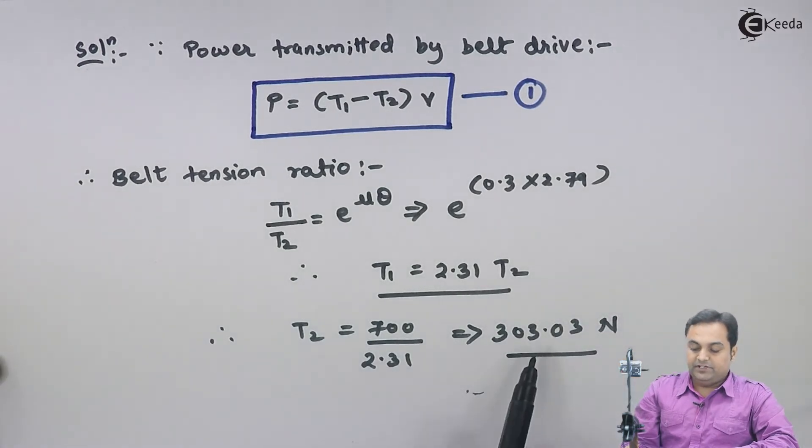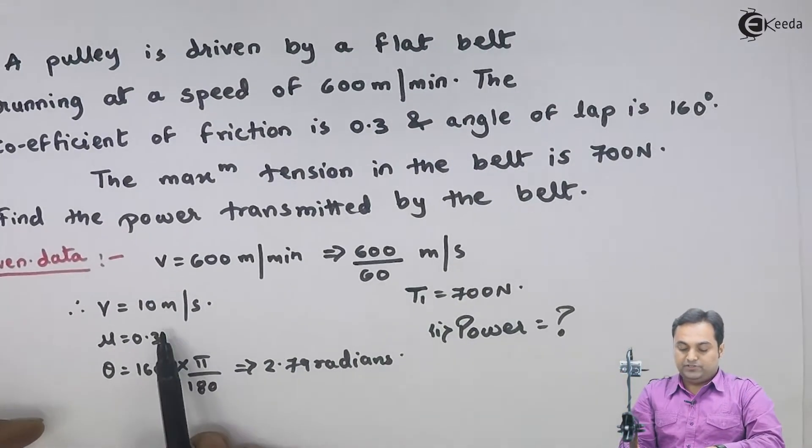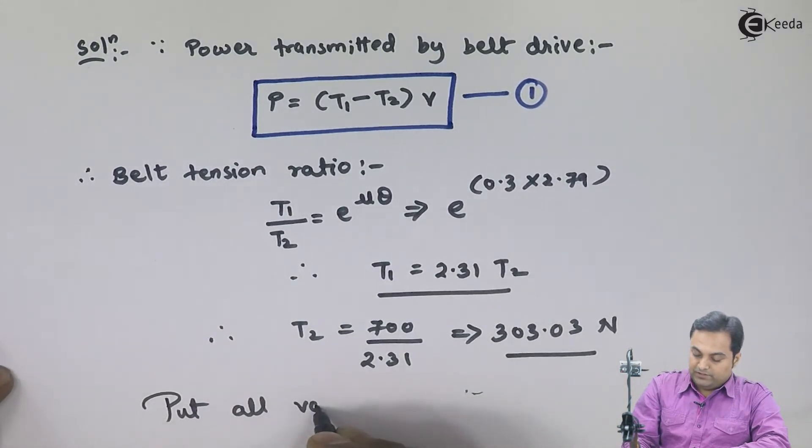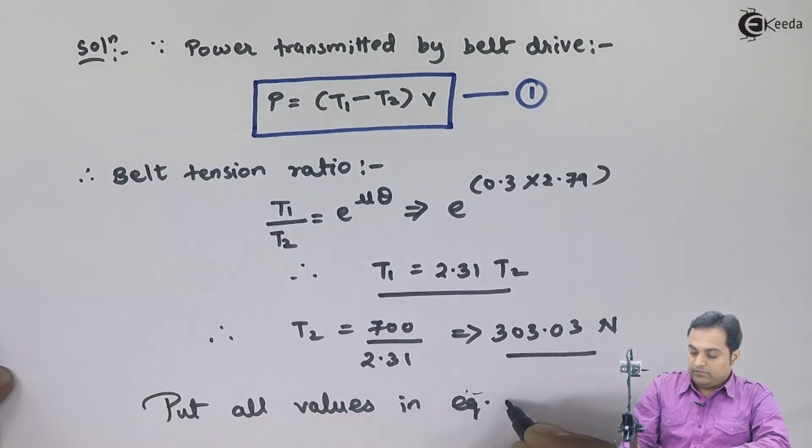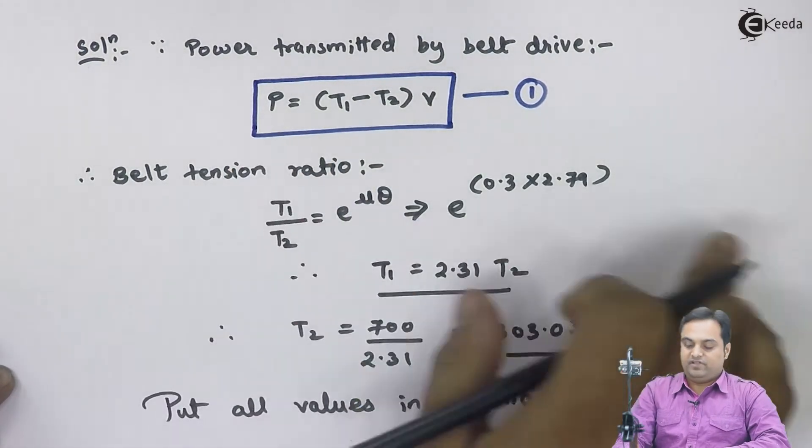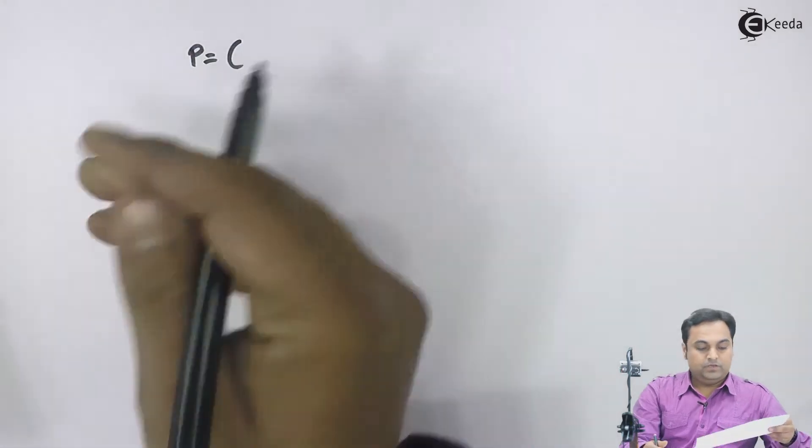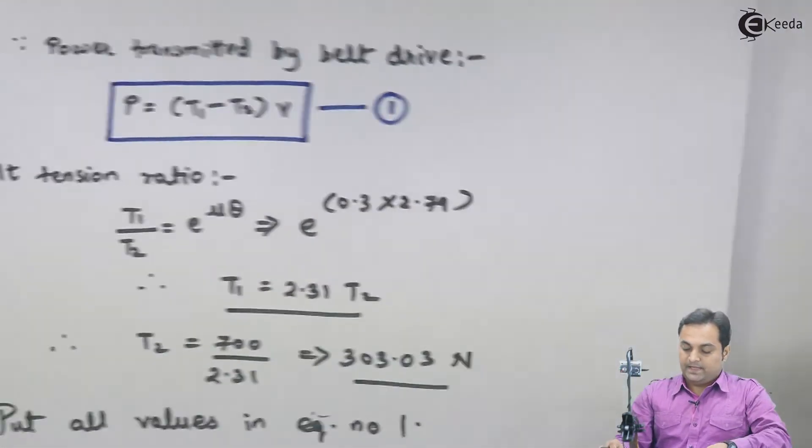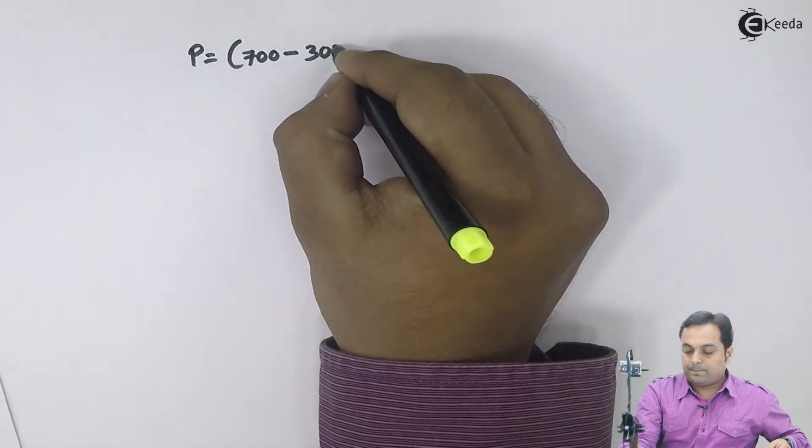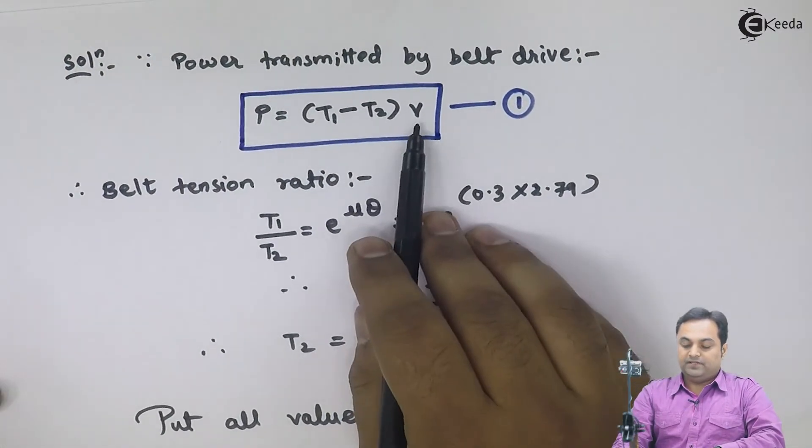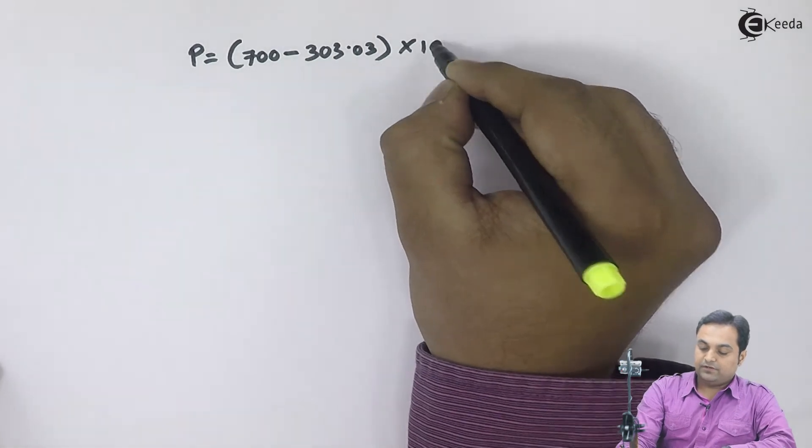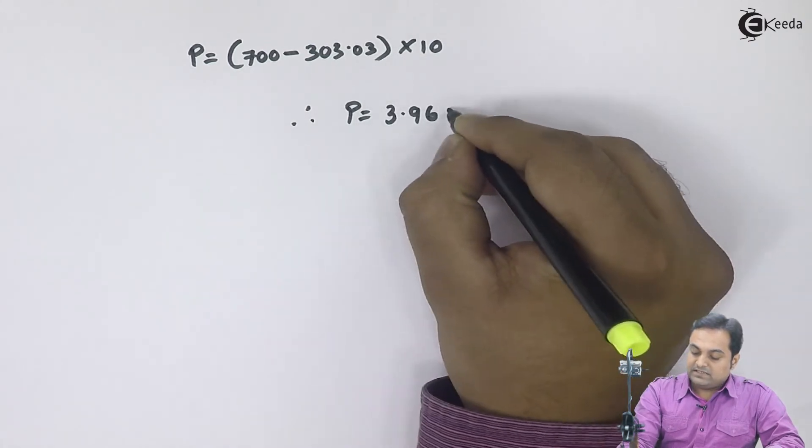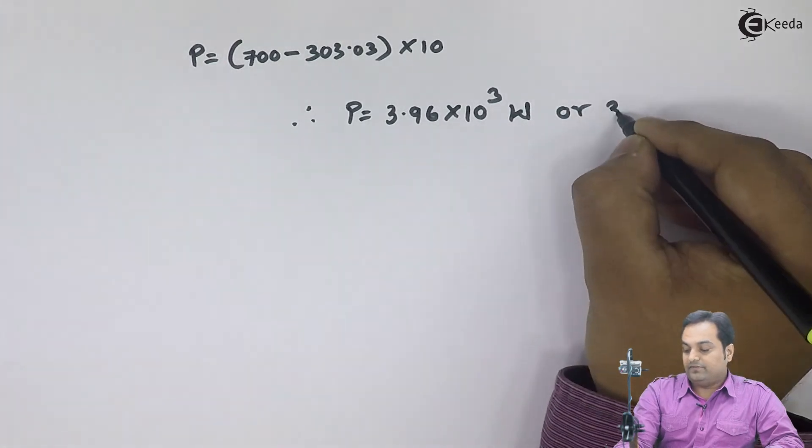After getting T1, T2, velocity is also given. I will put all values in equation number 1. Therefore, in equation 1, we have power P equals T1, which was given as 700, minus T2, which is 303.03, multiplied by the velocity. Velocity is 10 meters per second. From this, I will be getting the answer of power that comes out to be 3.96 times 10 raised to 3 watts, or we can say it is 3.96 kilowatts.